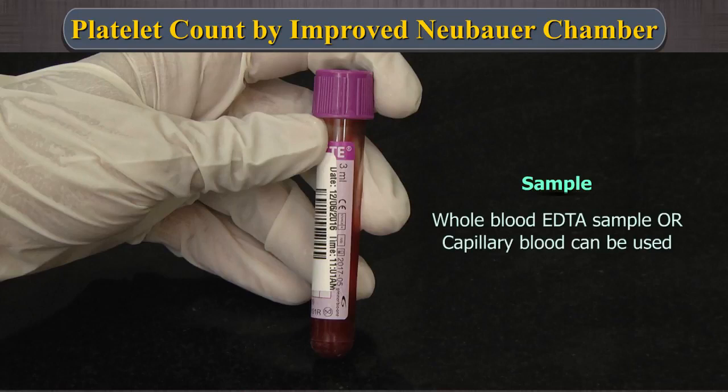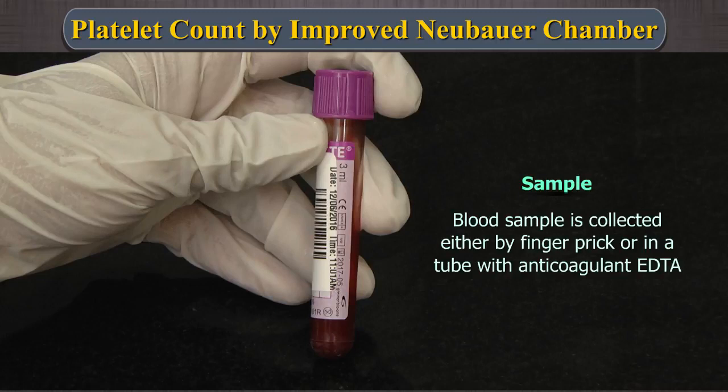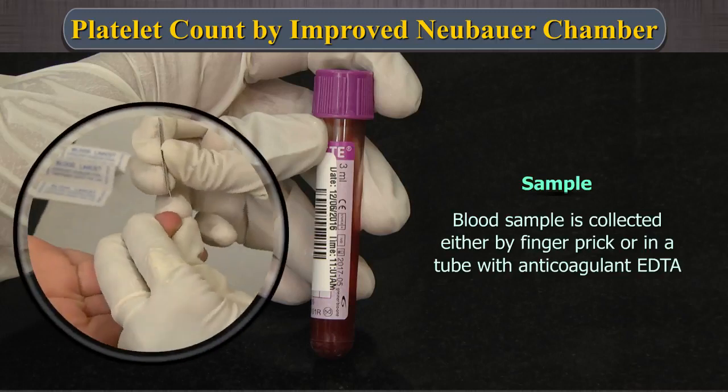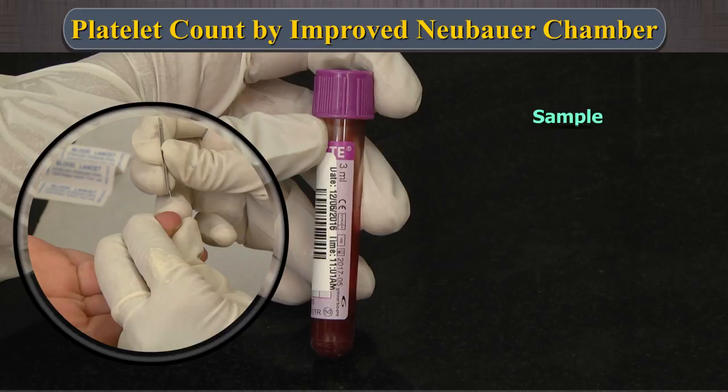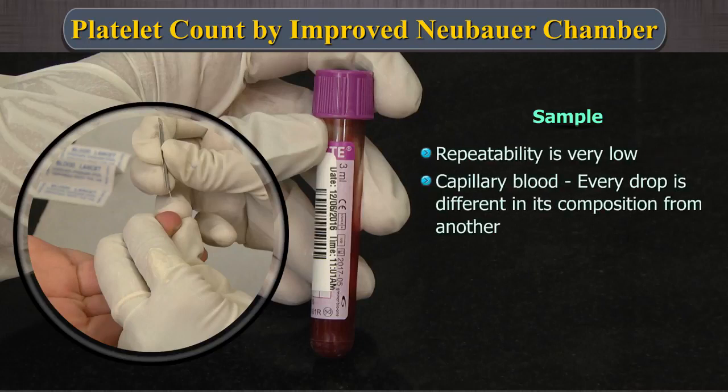Sample: Whole blood EDTA sample or capillary blood can be used. Blood sample is collected either by finger prick or in a tube with anticoagulant EDTA. It is to be noted that the manual platelet counting is a test very difficult to standardize. The repeatability is very low. If capillary blood is used, this becomes even harder as every drop may be different in its composition from another.